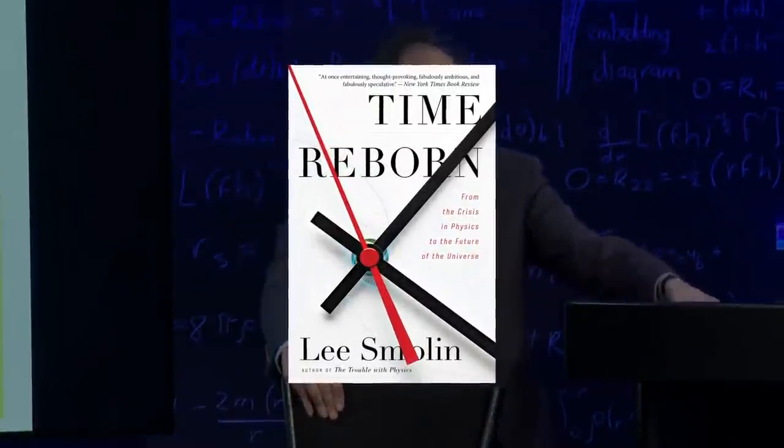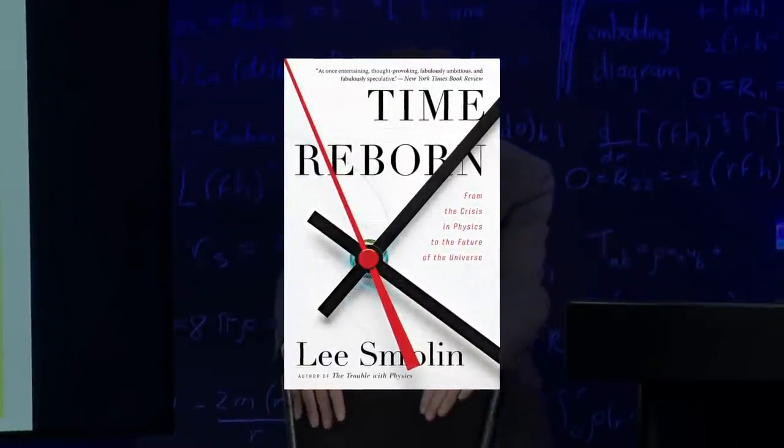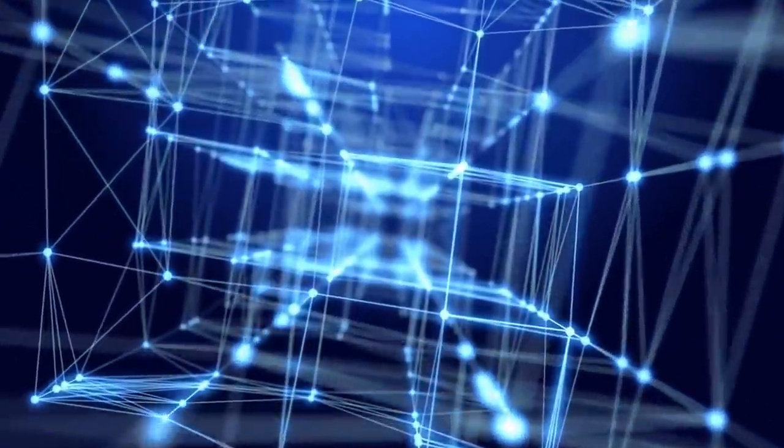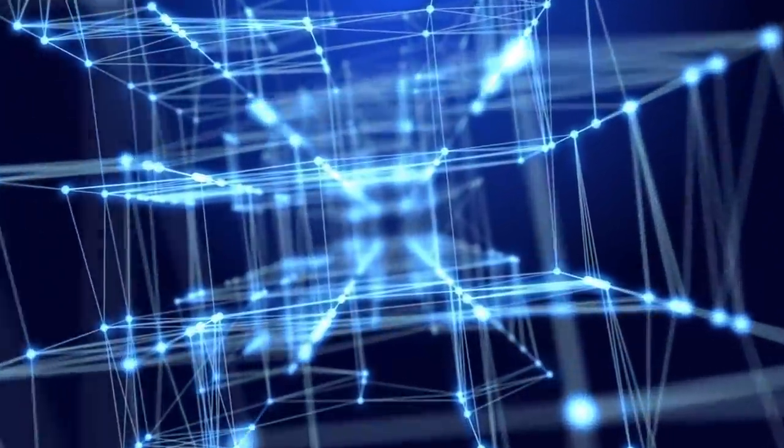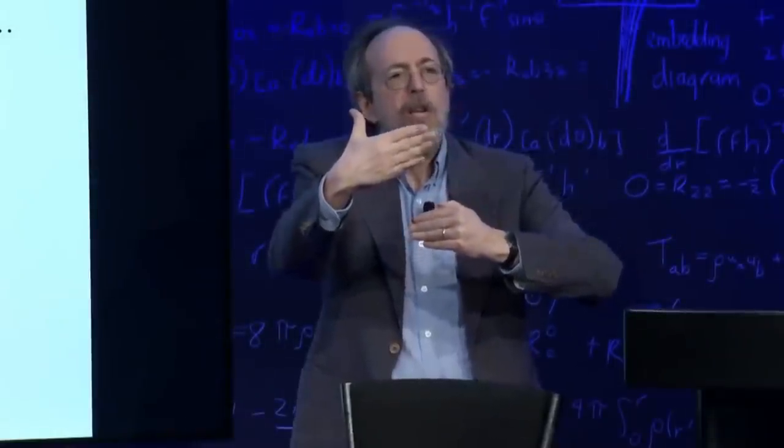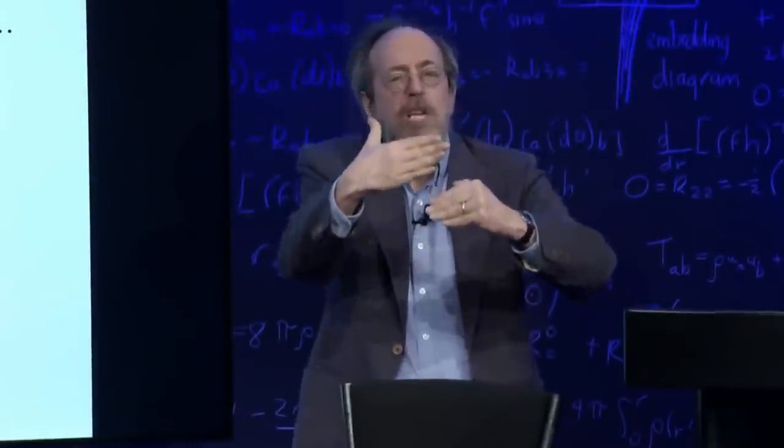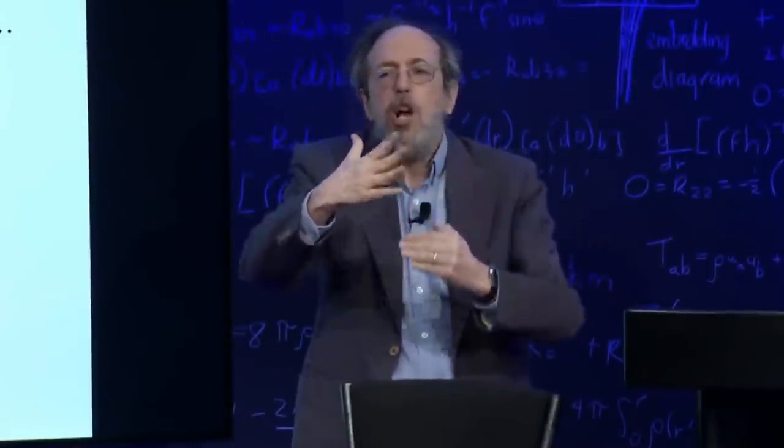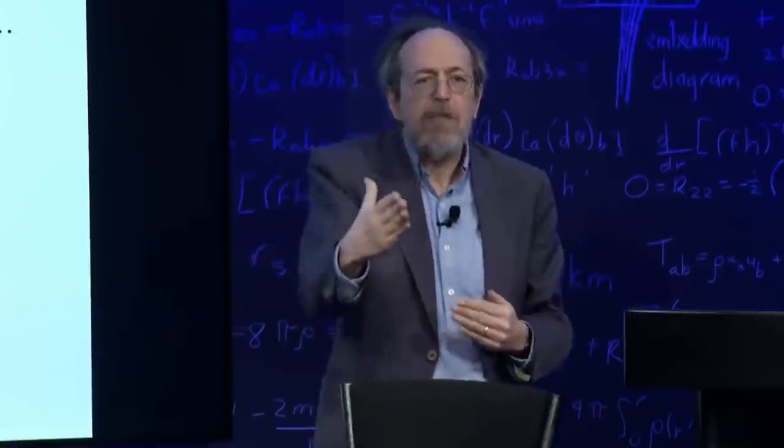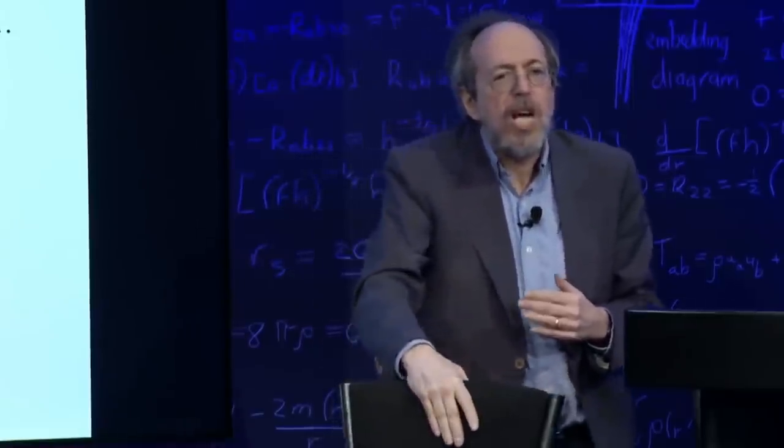Lee Smolin's 2013 book Time Reborn: From the Crisis in Physics to the Future of the Universe argues that often science does treat time as an illusion. That is, we need a theory that incorporates quantum mechanics, or quantum physics, along with space-time and gravity, and that's sometimes called the task of quantum gravity.